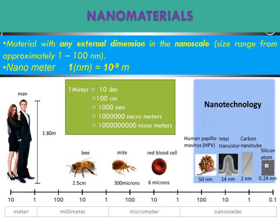Before going into that, what is a nanomaterial? A nanomaterial is a material having a nanoscale range in any one of its external dimensions. So a material having any one external dimension within the nanoscale region is called a nanomaterial. Generally, 1 to 100 nanometers is called nanoscale, and 1 nanometer equals 10 to the power of minus 9 meters.